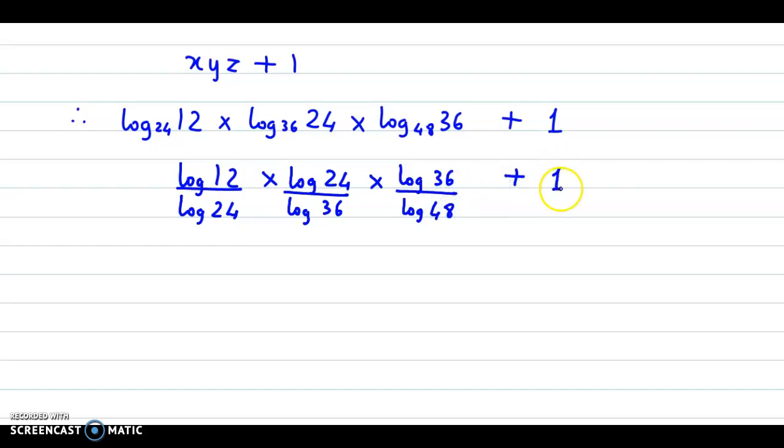Log 24 cancels with log 24, log 36 cancels with log 36, and now we have log of 12 upon log of 48, plus 1.